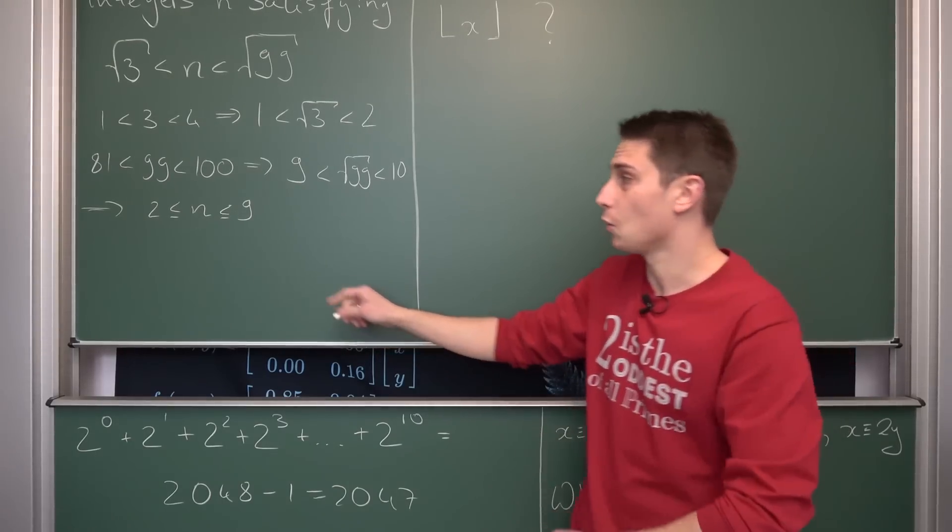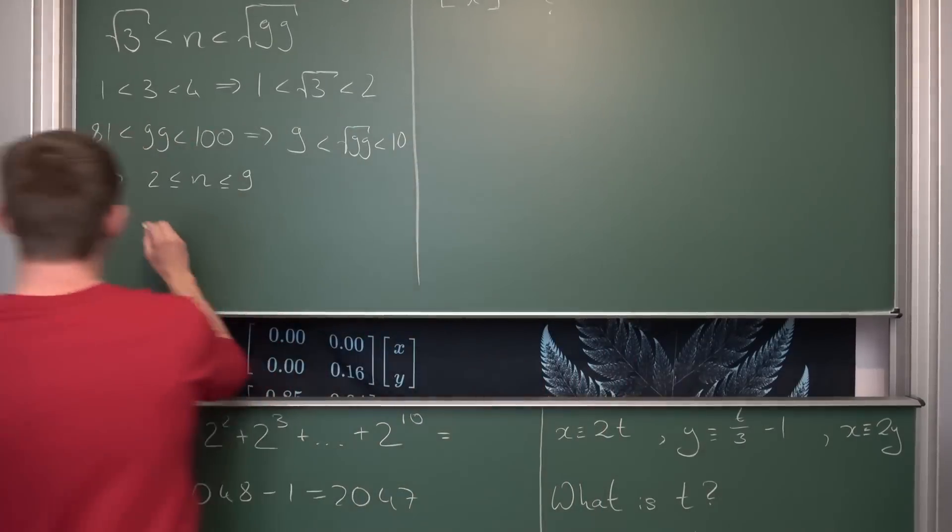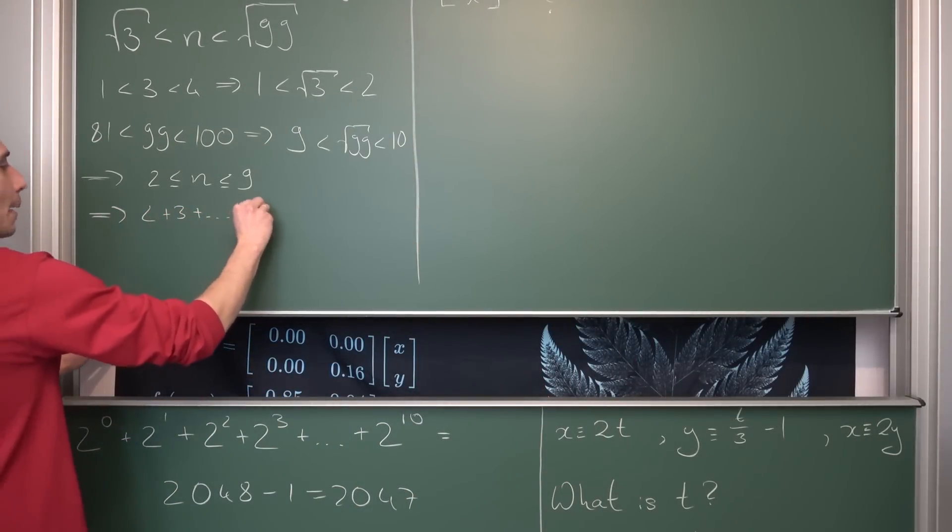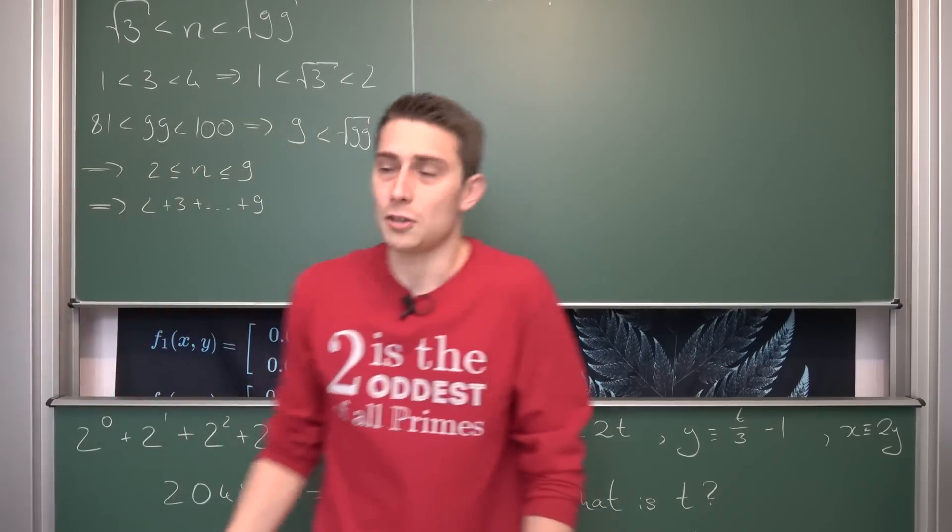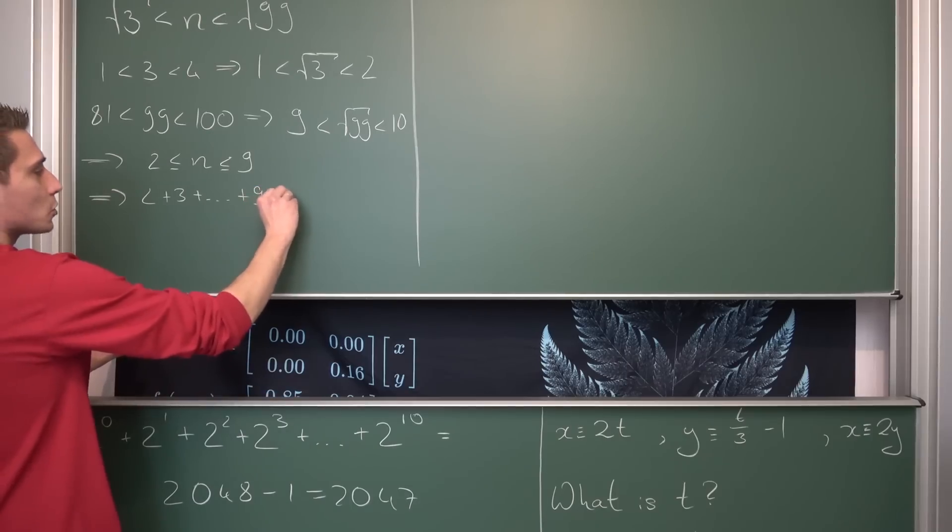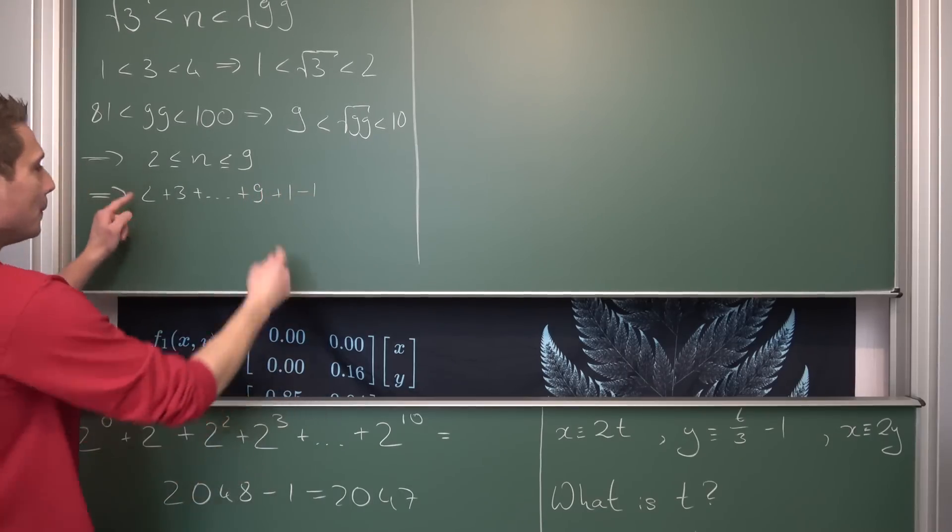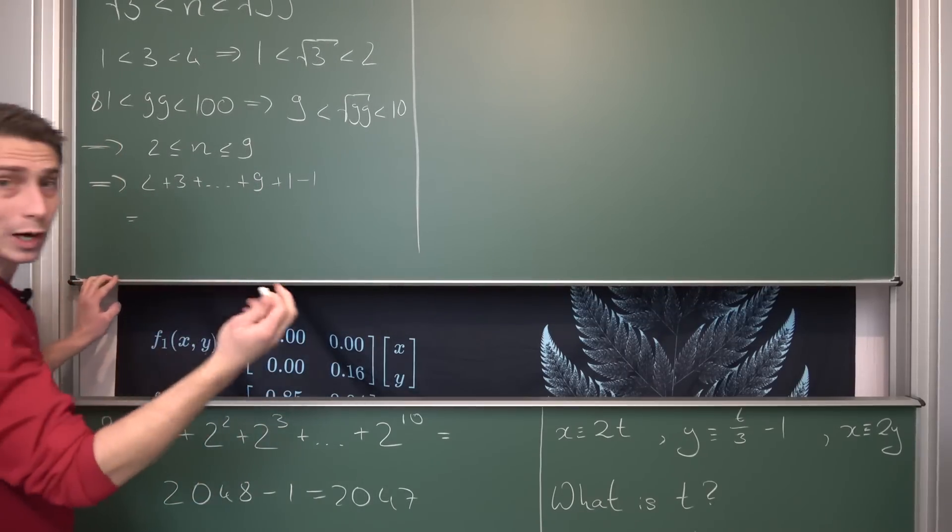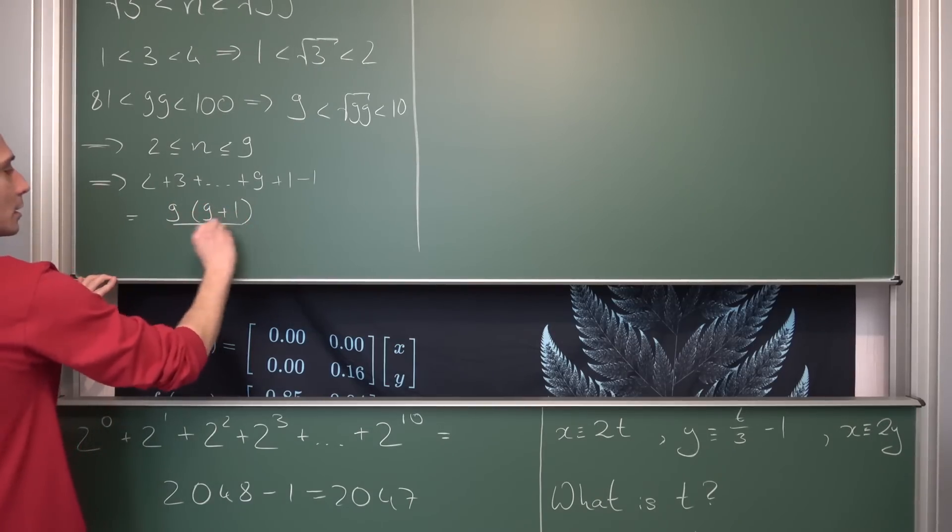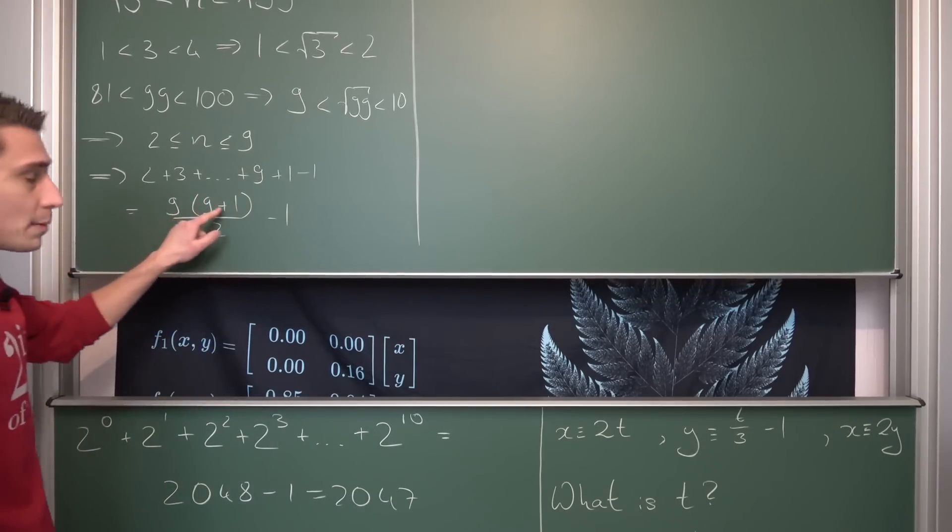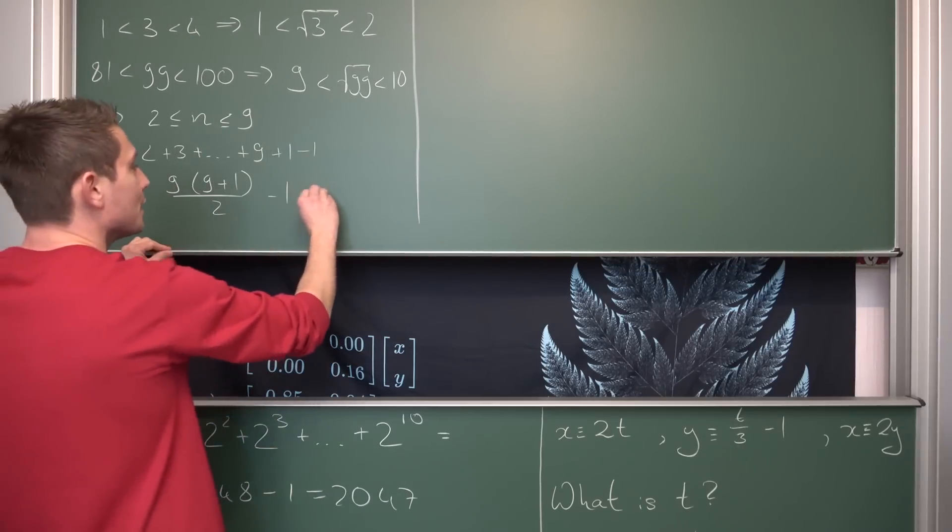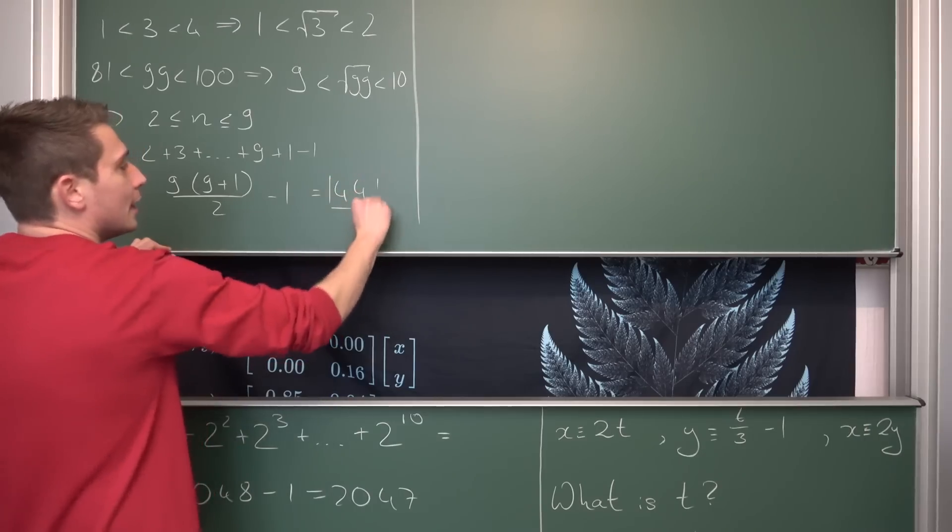Meaning finding the sums of all the numbers that n could possibly take is going to result in 2 plus 3 plus dot dot dot up until 9. And yeah, you could just simply calculate this or we are going to make use of little Gauss. Meaning what we are going to do is we are going to add a 1 and subtract it, meaning this part right here is just going to be little Gauss from 1 to 9, leaving us in 9 times 9 plus 1 divided by 2 minus 1. So 9 plus 1 is nothing but 10, 9 times 10 is 90 divided by 2 is 45 minus 1 is equal to 44, and hence we are done.